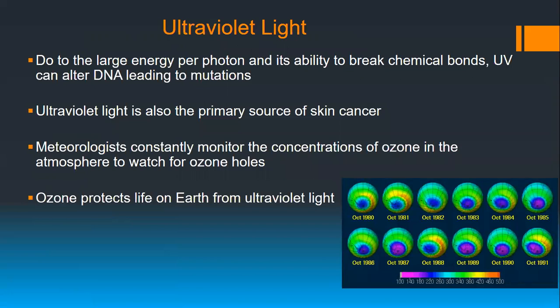The downside of ultraviolet light is that it's ionizing radiation. Fortunately, we are protected by an ozone layer. If the ozone layer had not formed, life on land would never have originated. The ozone layer protects life on Earth from ultraviolet light.